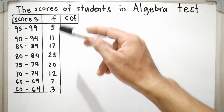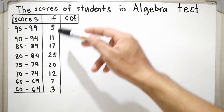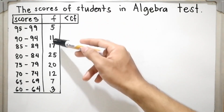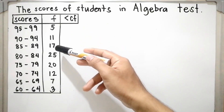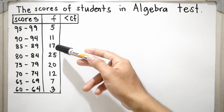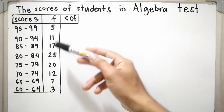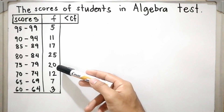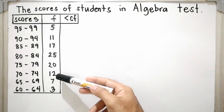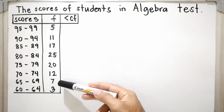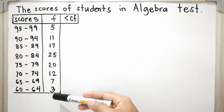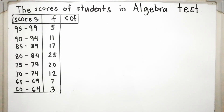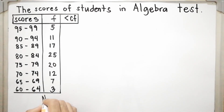To find how many students took the test, just add the frequencies: 5 plus 11 is 16, plus 17 is 33, plus 25 is 58, plus 20 is 78, plus 12 is 90, plus 7 is 97, plus 3 is 100. So there are 100 students who took the test. N is equal to 100.